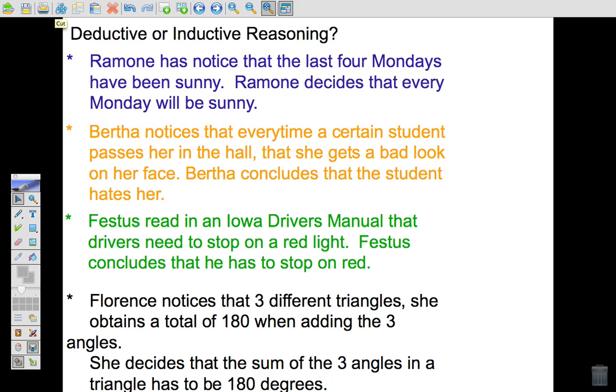Florence notices that three different triangles, she obtains a total of 180 when adding the three angles. She decides that the sum of the three angles in a triangle has to be 180. Now, did she read this? Was she told that? Did somebody say that? Were they read it for a fact that the three angles add up to 180? Or is it something she observed?